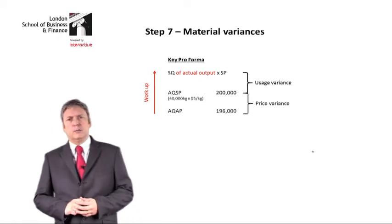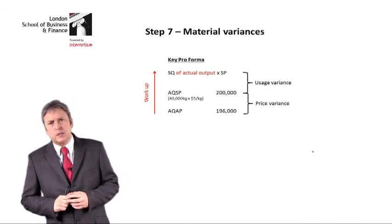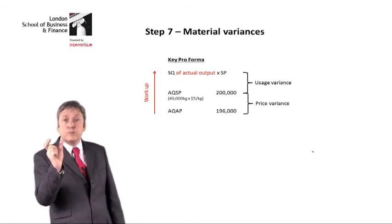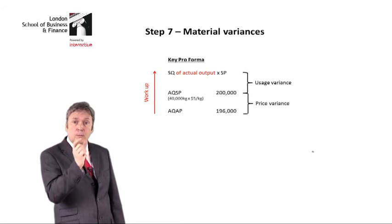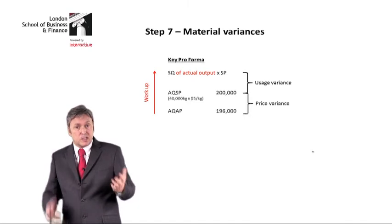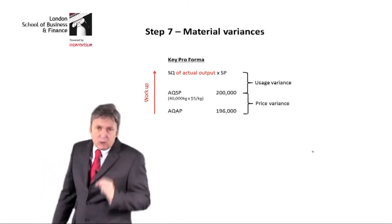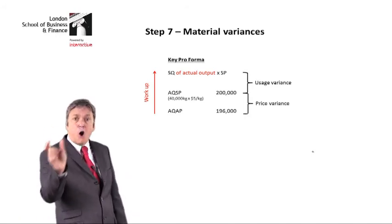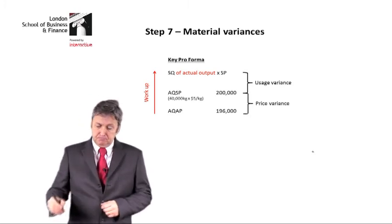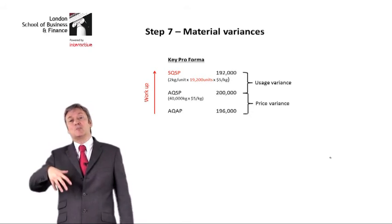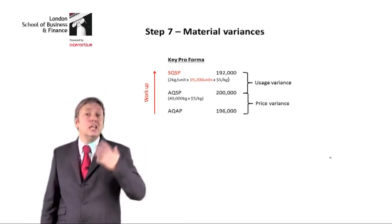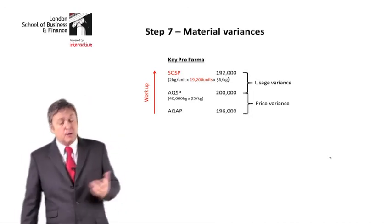Let's just think about that standard quantity for a moment. It's not budgeted quantity. When I say standard quantity, I mean the expected quantity required for each unit. But we have to remember: materials are variable cost variances, and we would expect them to vary with the level of activity. So when we calculate the standard quantity, we want the standard quantity of actual output, because the actual output relates to the actual costs we see below. The standard quantity was 2 kilos per unit, the actual output was 19,200 units, and we multiply by the standard price.